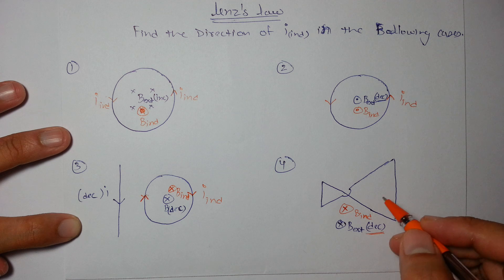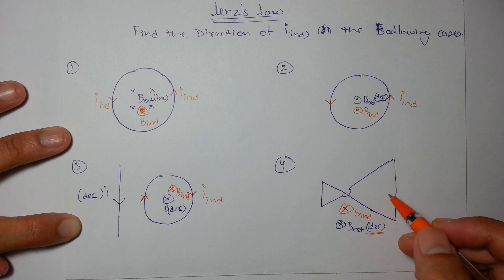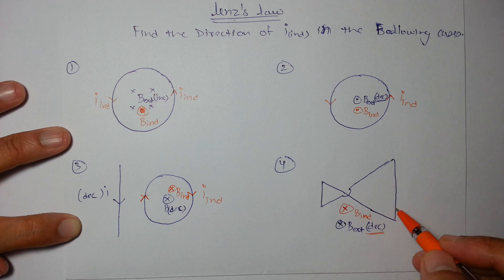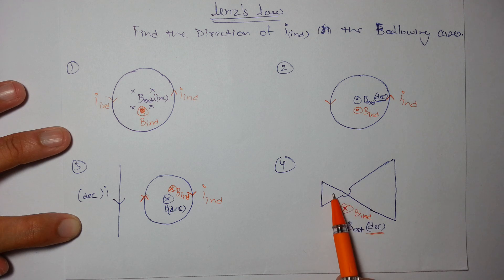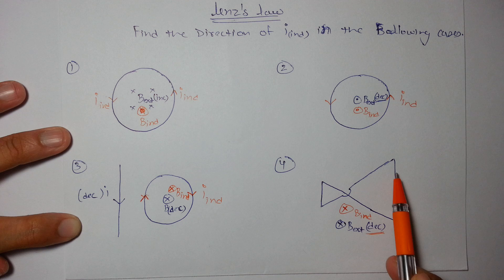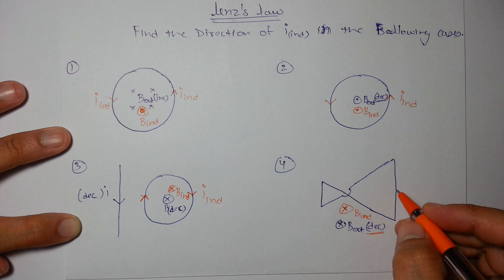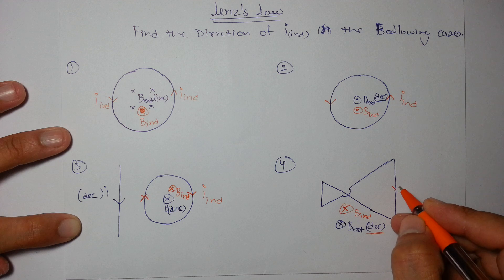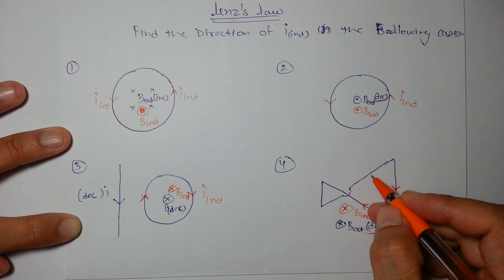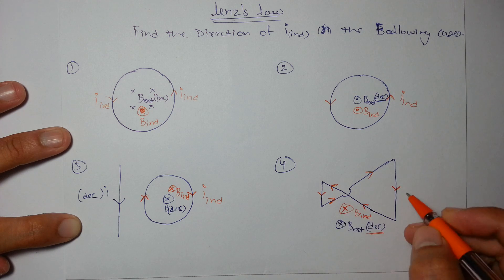If we draw two loops, the change in flux for the larger loop will be more, so the EMF in the whole loop will be determined by the larger area loop. The direction of induced EMF in the complete loop will be according to the larger loop. Since B induced is inward, the current in the larger loop should be clockwise, and in the inner loop it will be anti-clockwise.